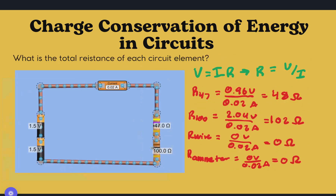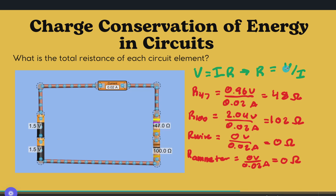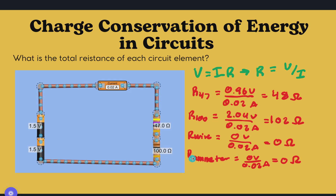For the total resistance of each circuit element, we use R equals V over I. R47, this resistor, gives 48 ohms using V over I, which is very close to 47. R100 gives 102 ohms, which is very close to 100. The others are all zero because there are no resistors there. These small differences are just rounding errors.